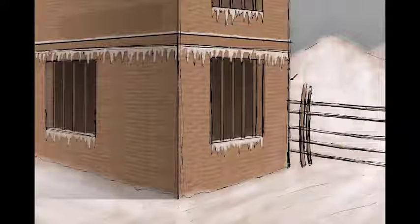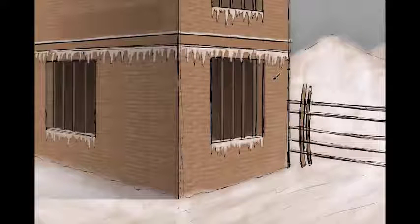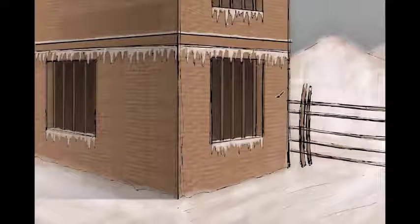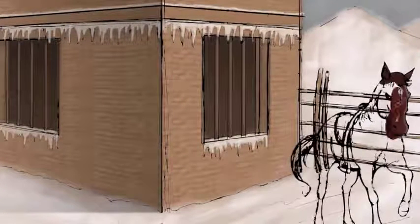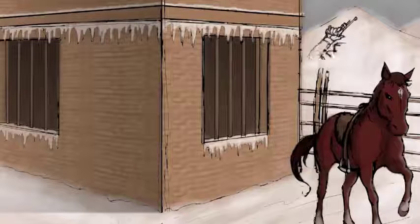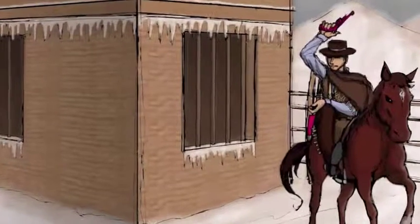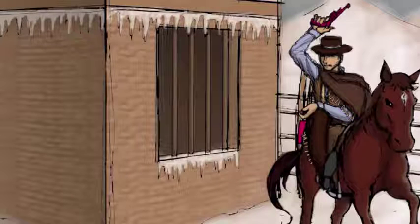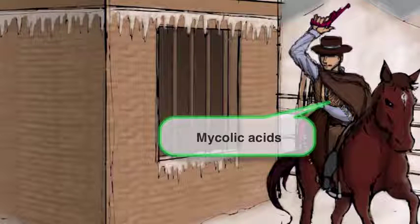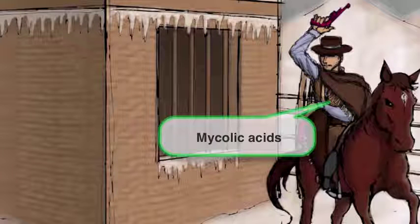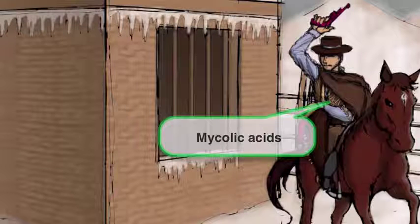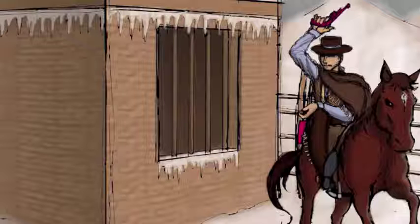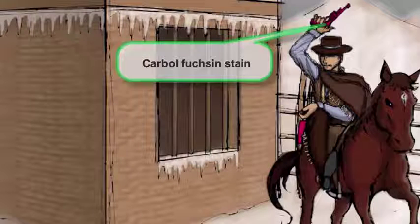Since leprae is a type of Mycobacterium, it shares some of the same characteristics with tuberculosis — mainly that it's an acid-fast bacteria. So we're going to bring in our acid-fast gunslinger to the scene. As a quick review, the tassels on his cloak and chaps represent the mycolic acids, which are made up of waxy chains and are responsible for taking up the acid-fast stain. The gunslinger slings a fuchsia-colored gun to remind you that the acid-fast stain is comprised of carbol-fuchsin.